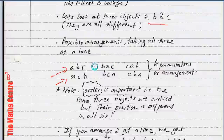So, what we have done is, we have arranged three objects, taking all three at the same time. And what we have found is, we have six such permutations or arrangements which are possible.